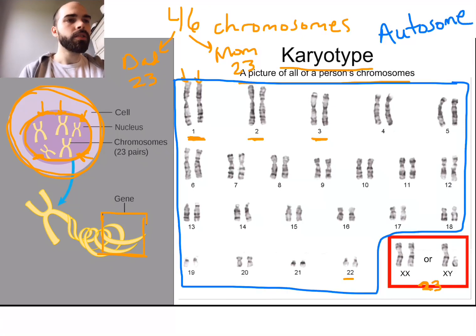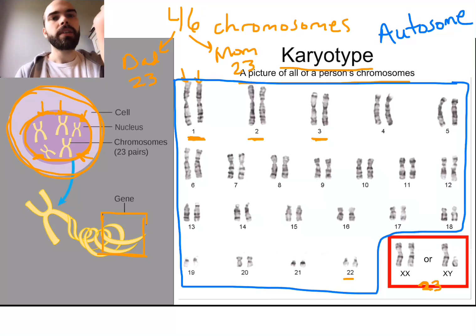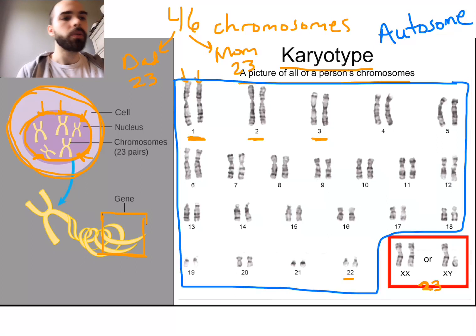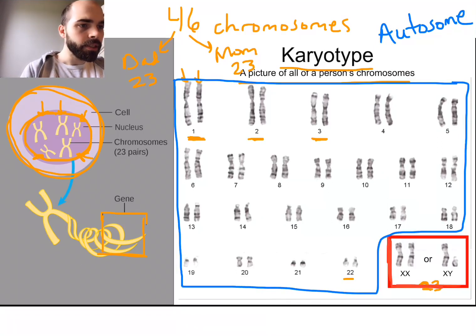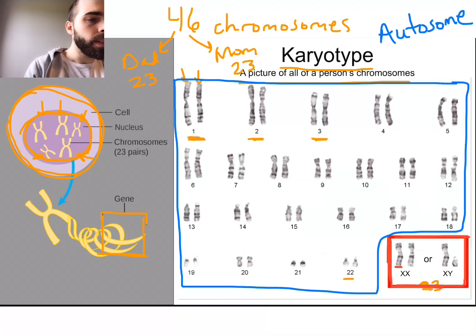An autosome is not a sex chromosome. Your sex chromosome determines your biological sex. Down here, the 23rd pair — there are two possible sex chromosomes. You can either have an X, which is kind of tall, or a Y, which is kind of short.